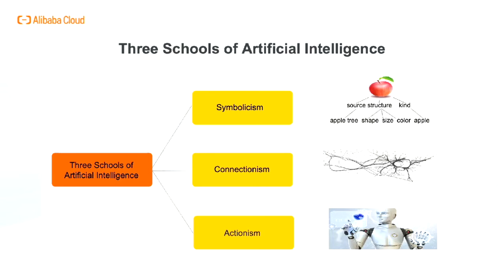The school of symbolism holds that the basic unit of human cognition and thinking is the symbol, and the cognitive process is an operation on the representation of symbols. Connectionism is an intelligence simulation method based on neural network connection mechanisms and learning algorithms, believing that artificial intelligence originates from bionics, especially the study of the human brain model. Actionism is a behavior intelligence simulation method based on perception-action, originating from a school of psychology at the beginning of the 20th century, believing that behavior is the combination of various body reactions used by organisms to adapt to environmental changes, with the theoretical goal to foresee and control behavior.